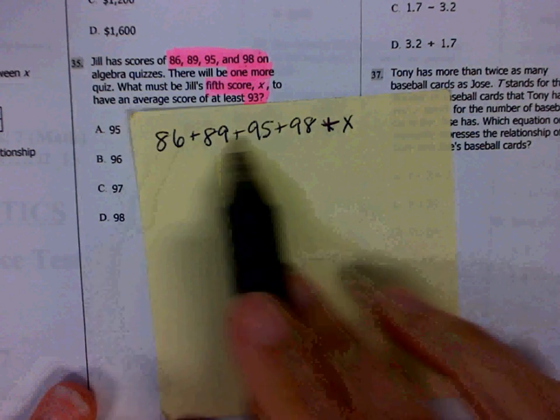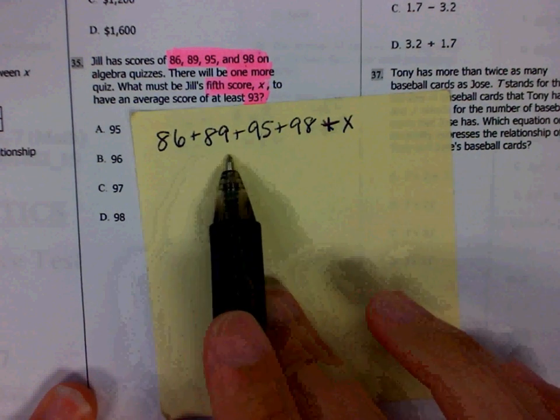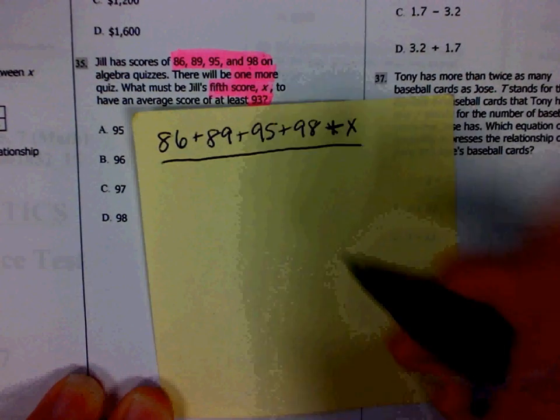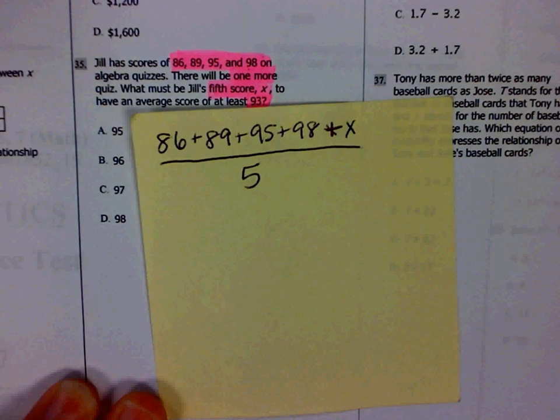If I want to find the average of these scores, I add them all up and then divide by how many numbers there are. There are five numbers in this set, so I am going to divide all of these by five.